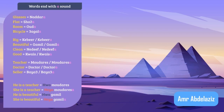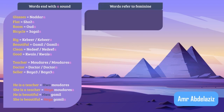The second case of feminine words is that some feminine words don't end with a sound, but they refer to feminine. For example, the word 'bint' — it doesn't end in a sound, but it means 'girl', so it's feminine. 'Um' means 'mother', and 'ocht' means 'sister'.